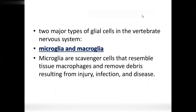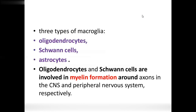There are two major types of glial cells: microglial and macroglial. Microglial means small; macroglial means large. Microglial cells are macrophages — scavengers. There are three types of macroglial cells: oligodendrocytes, Schwann cells, and astrocytes.